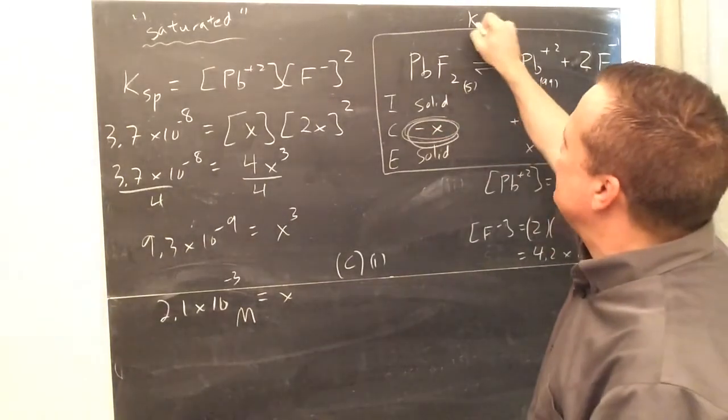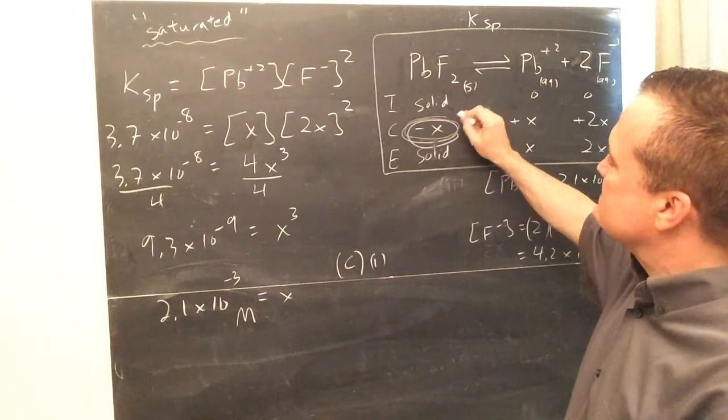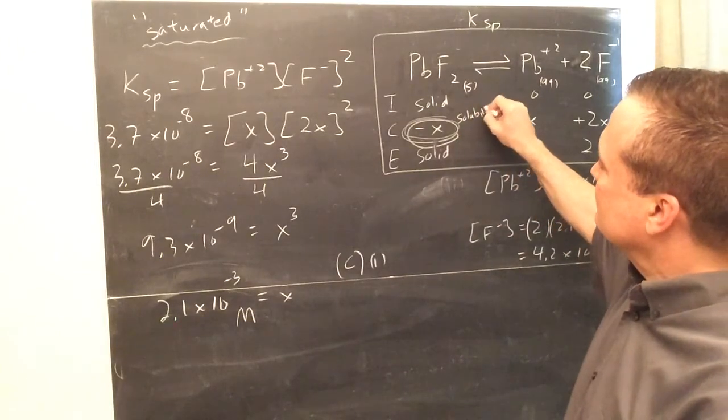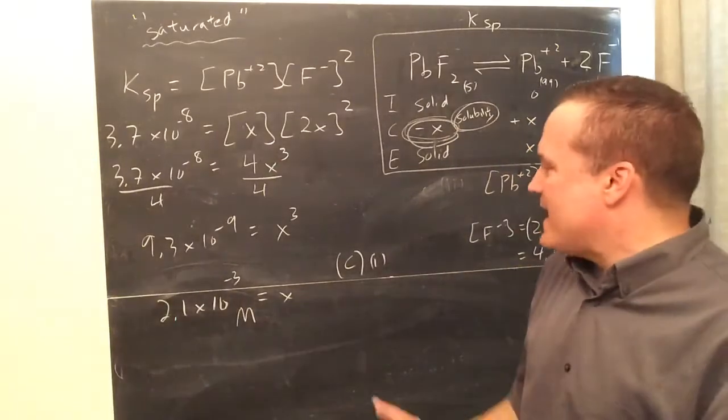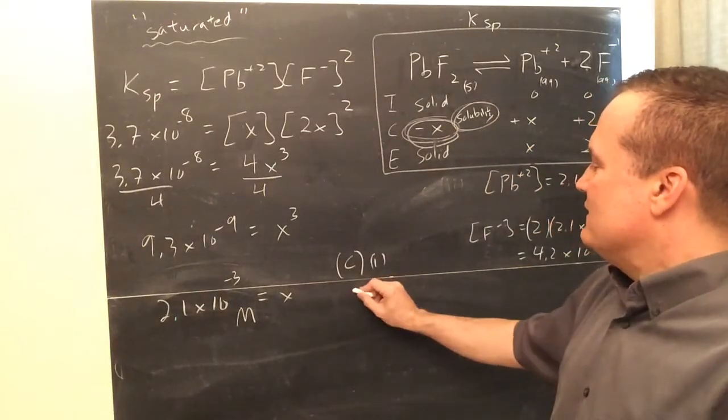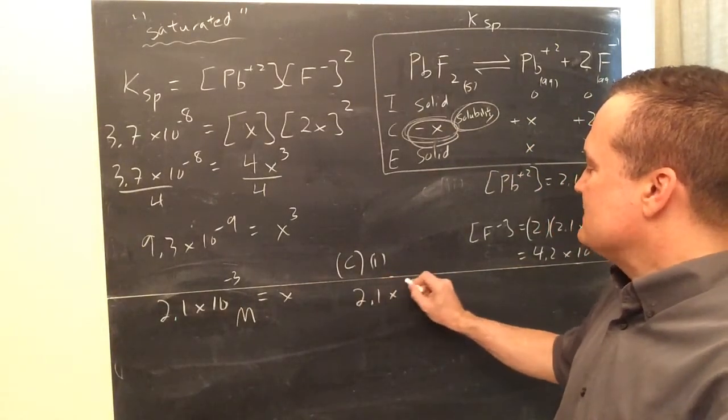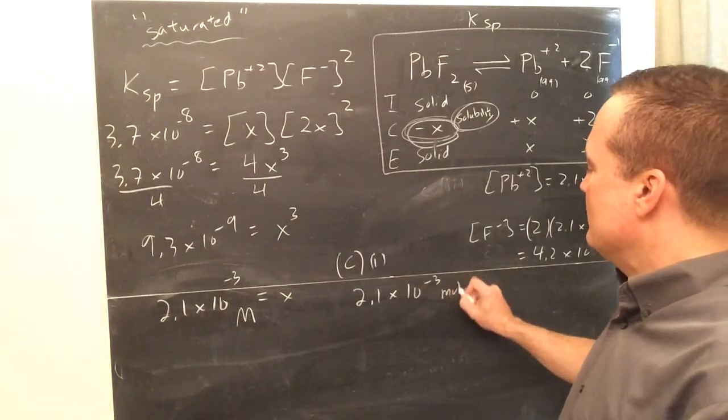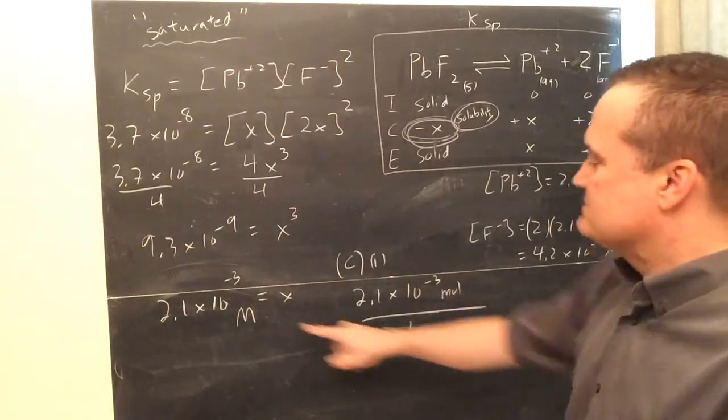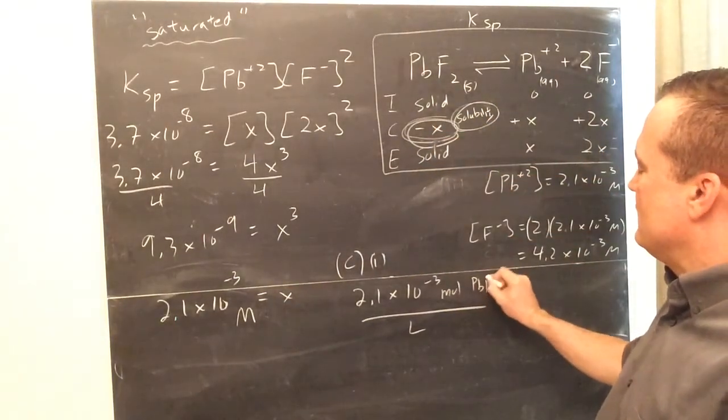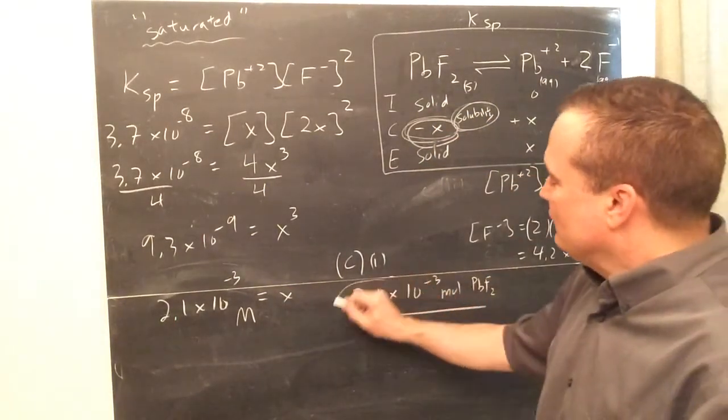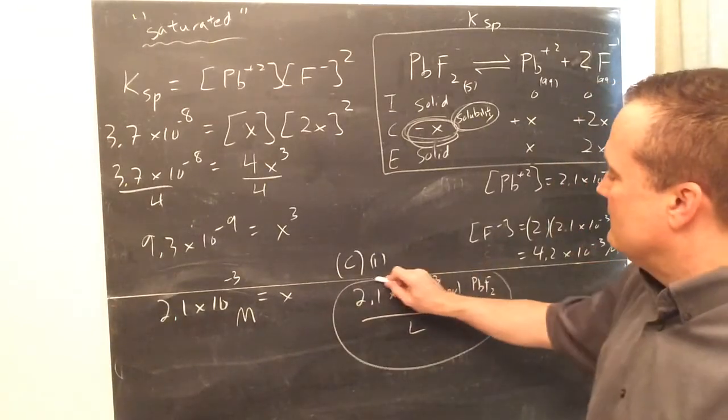On a KSP, this is equal to the solubility. That's the solubility. And what do I mean by that? I'm going to show you. 2.1 times 10 to the negative 3 moles per liter. Molarity is moles per liter, right? Moles of PbF2 per liter. Look at this very important number here.